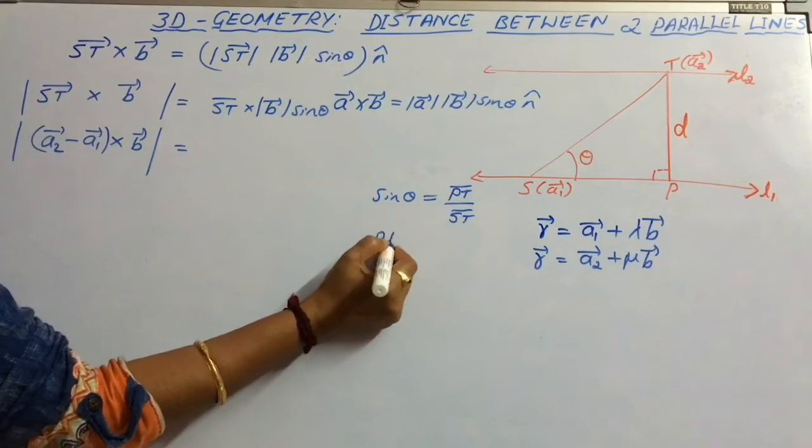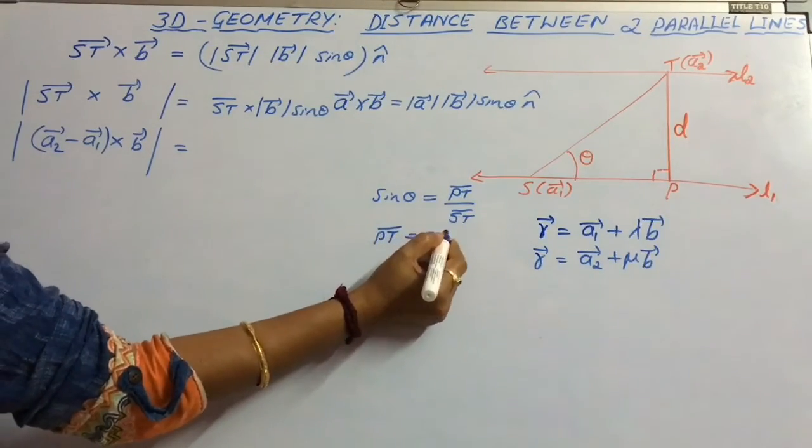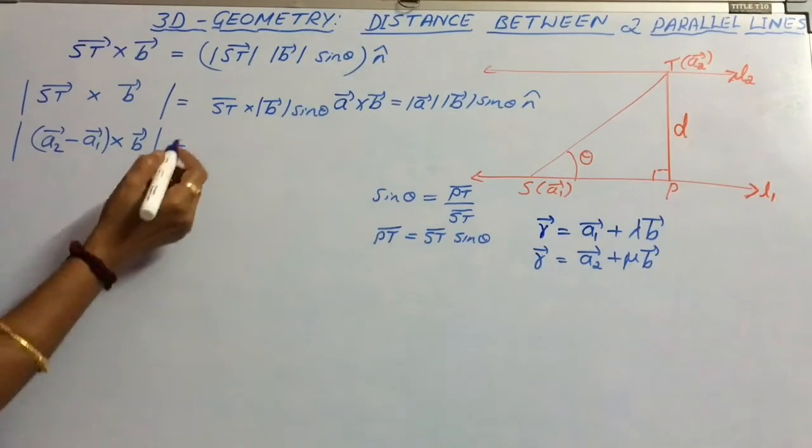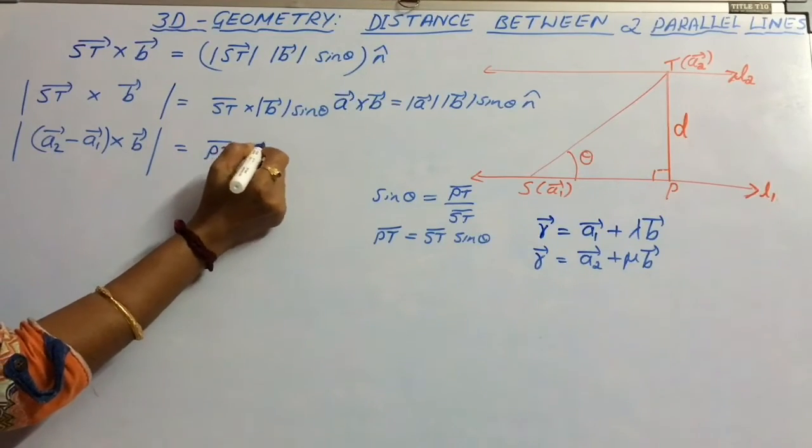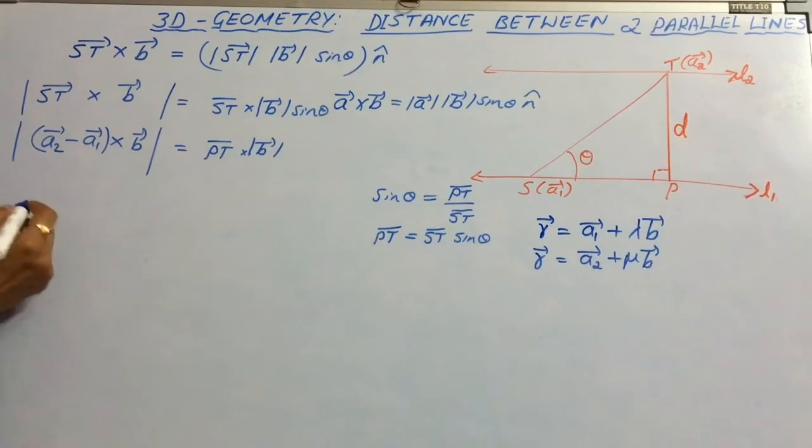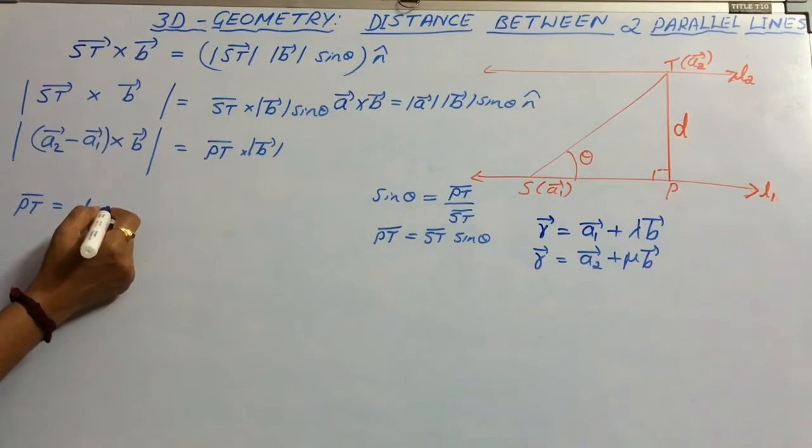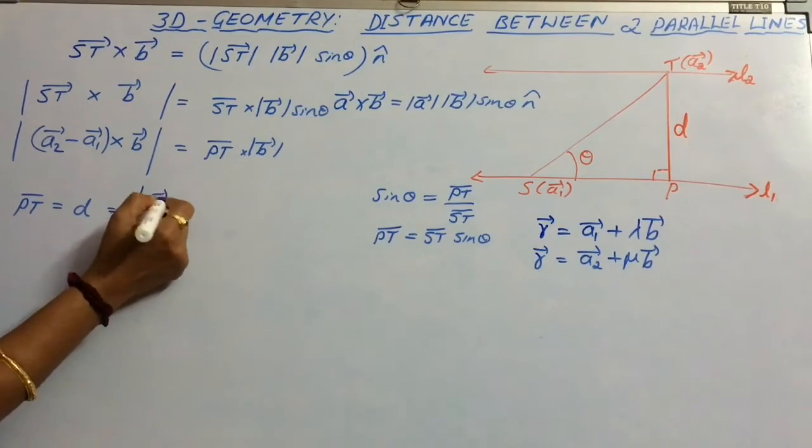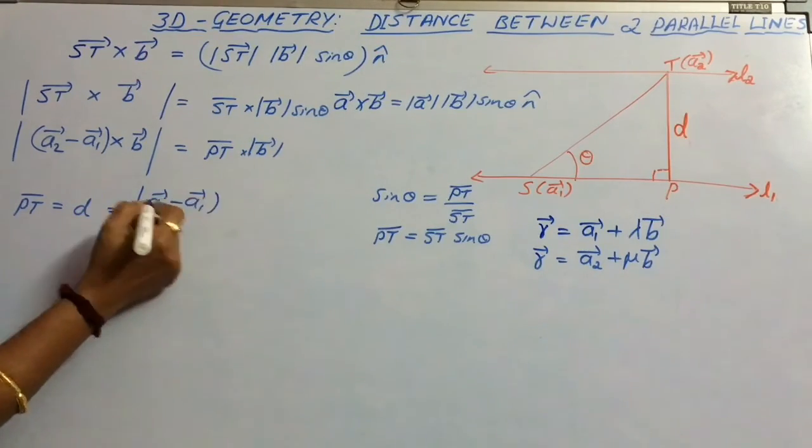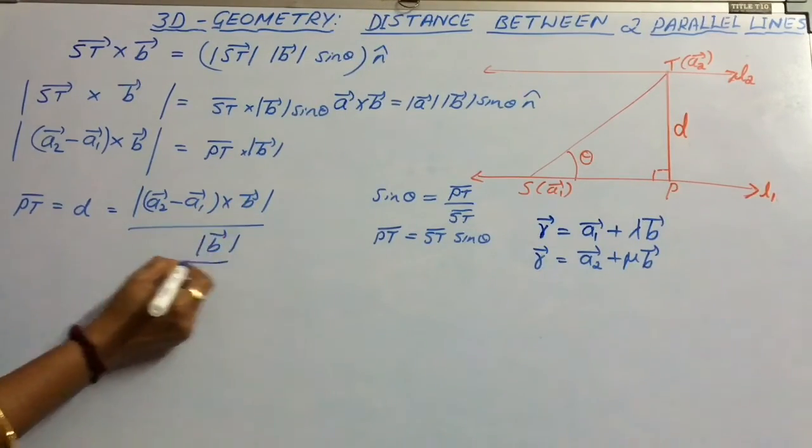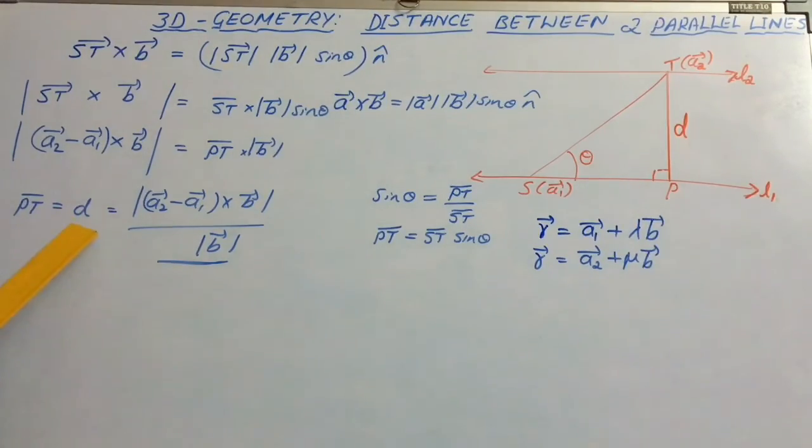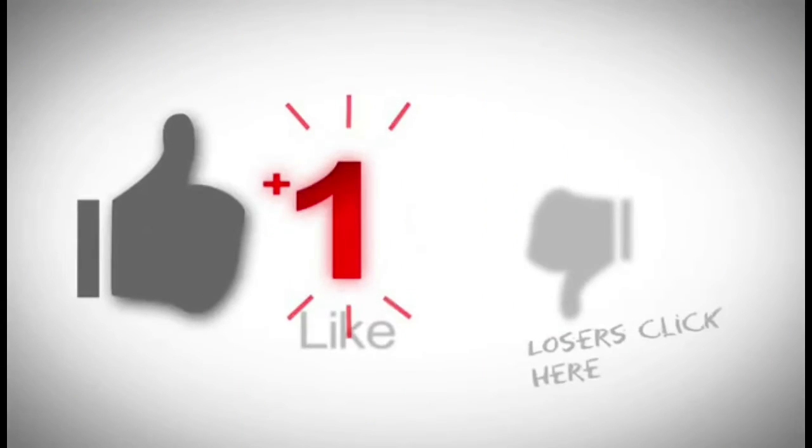Therefore Pt equals St sin theta. Let us replace St sin theta by Pt times |b|. Therefore length Pt, which equals d, can also be written as magnitude of (a2 - a1) cross product with vector b, divided by |b|, and this gives the distance between two parallel lines.